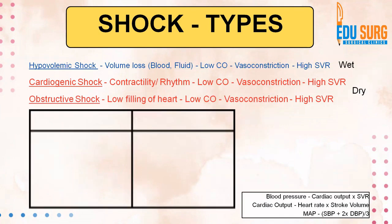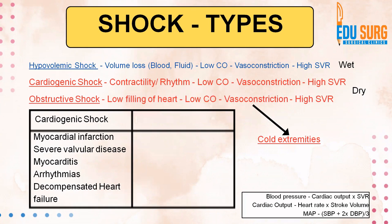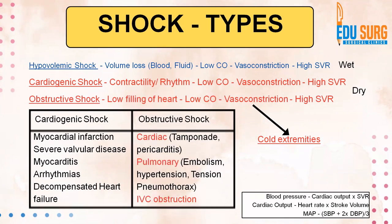What are the causes of cardiogenic and obstructive shock? Cardiogenic shock: the most common causes are myocardial infarction, severe valve disease, myocarditis, arrhythmias, and decompensated heart failure. Coming to obstructive shock, the obstruction can be due to pericardial reasons — tamponade and pericarditis — pulmonary lesions such as pulmonary embolism, pulmonary hypertension, tension pneumothorax. Another cause of obstructive shock is IVC obstruction.